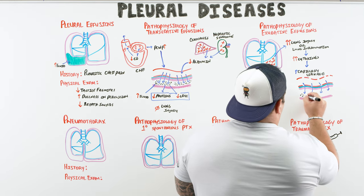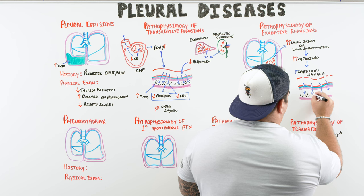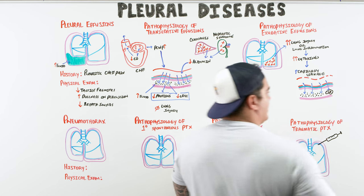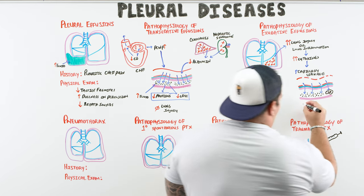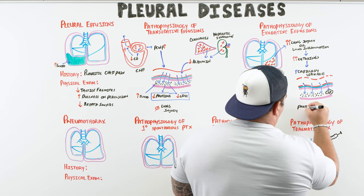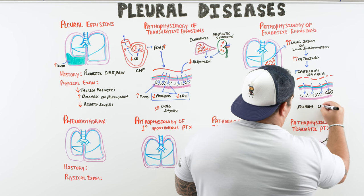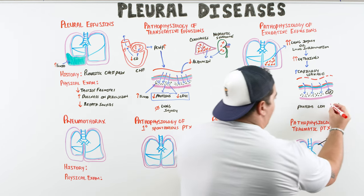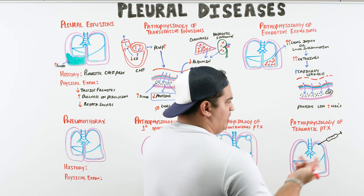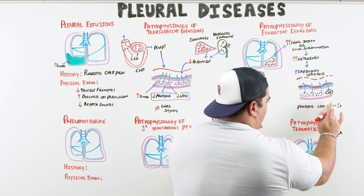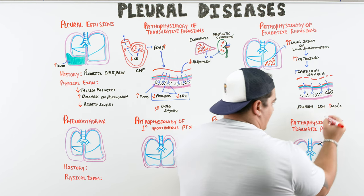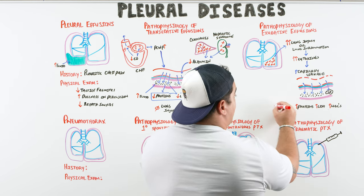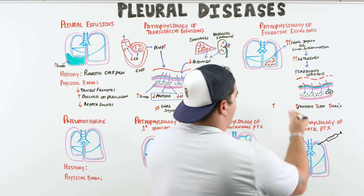In exudative effusions you see lots of fluid, lots of protein, lots of LDH, and potentially increased white blood cells. High protein, high LDH, and white blood cells in the fluid indicate lung injury is actually occurring — this is how you use the fluid composition as a diagnostic tool to differentiate exudative from transudative effusion.